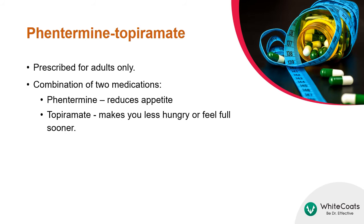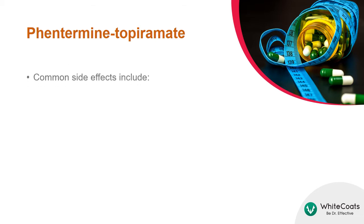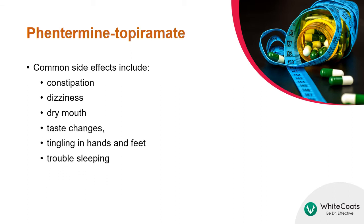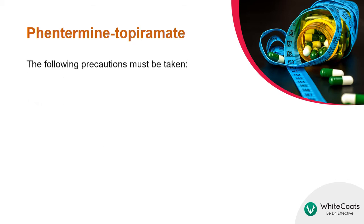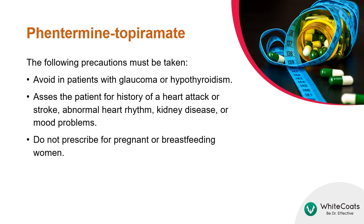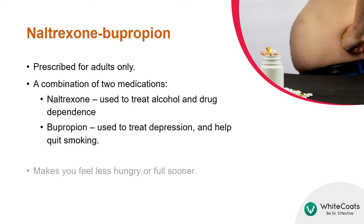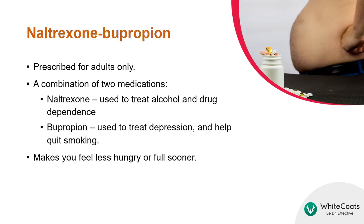Phentermine-Topiramate is prescribed for adults only. It is a combination of two medications: Phentermine, which lessens your appetite, and Topiramate, which makes you less hungry or feel full sooner. Common side effects are listed here. Phentermine-Topiramate should be avoided in patients with glaucoma or hypothyroidism. Ask the patient for history of a heart attack or stroke, abnormal heart rhythm, kidney disease, or mood problems.